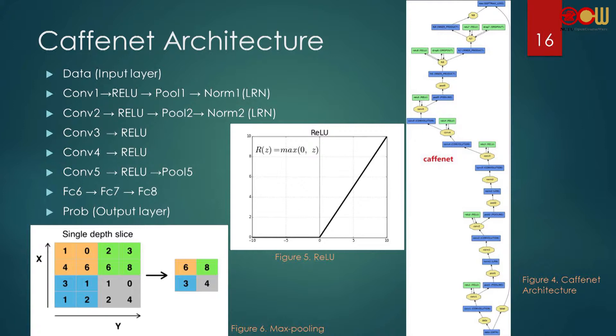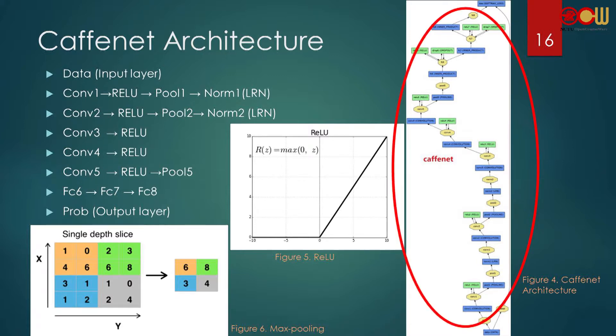What does CaffeNet look like? We can see the bottom and top layers. The bottom layers are called input layers, and the top layers are called output layers. Except for these two, all other layers are called hidden layers. The structure may look huge, but you can divide it into module parts.